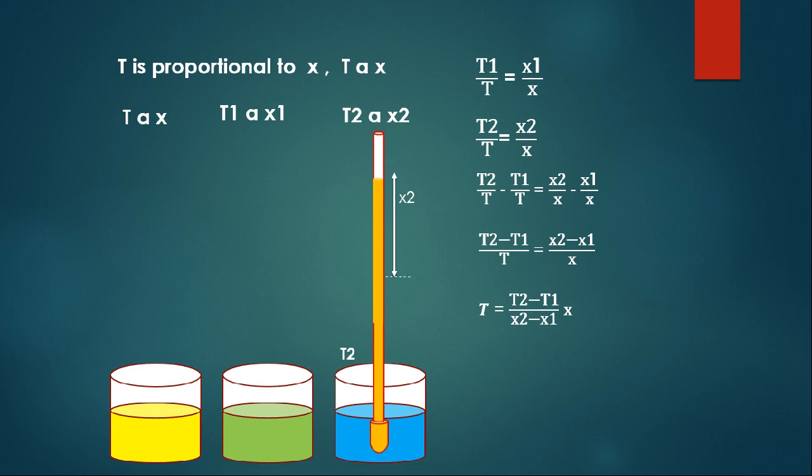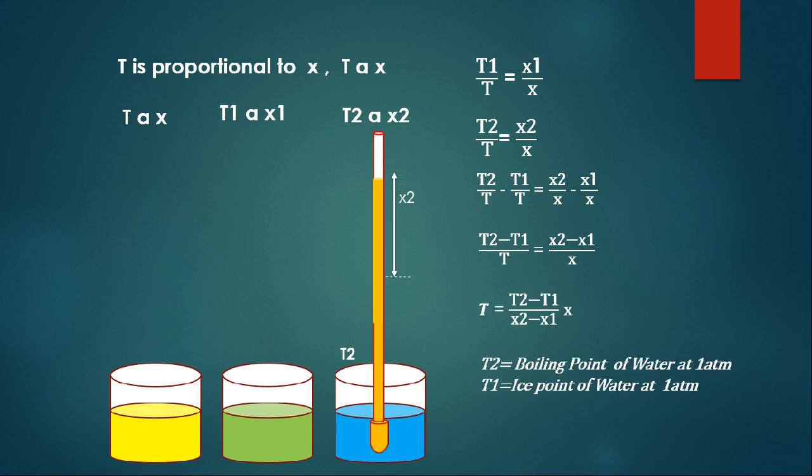There are two conventions. Before 1954, the convention used the boiling point of water and the ice point — T2 is fixed as the boiling point of water at 1 ATM and T1 as the ice point of water at 1 ATM.